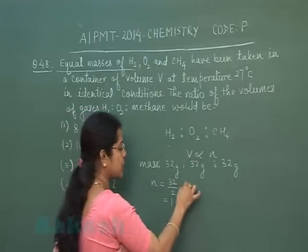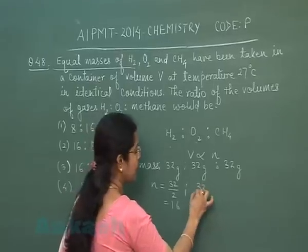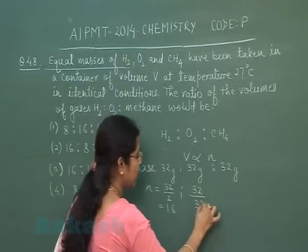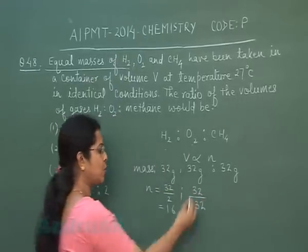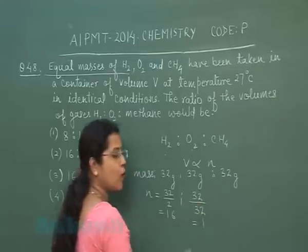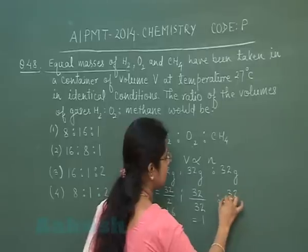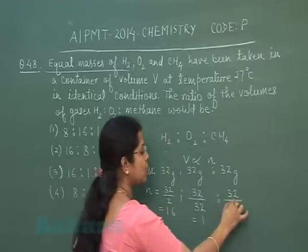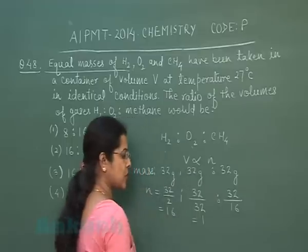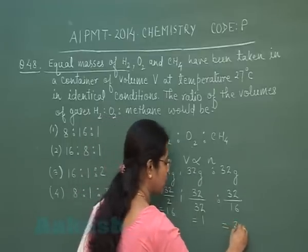While in the case of oxygen, mass is given as 32 and its molecular mass is 32, so this is equal to 1 mole. In the case of methane, the mass is given as 32 grams and its molecular mass is 16, so the number of moles is 2.